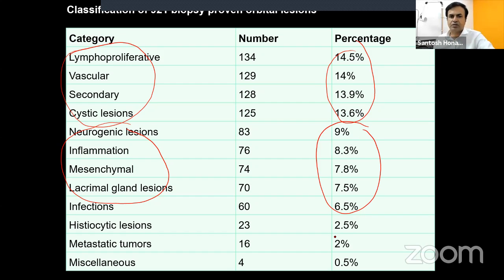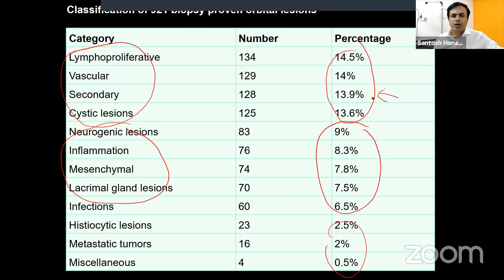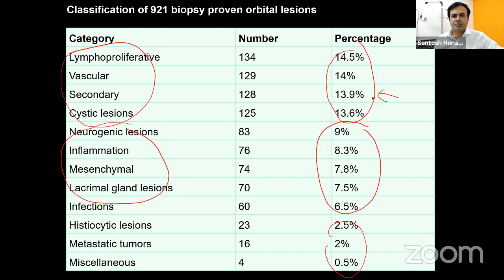Depending on what lesions are more common and the pathology produced — for example, if it's a well-circumscribed intraconal mass, your differential is narrowed to four or five. If it's a well-circumscribed extraconal superior orbital lesion, it narrows to just two or three. All that having been taken into consideration, you proceed to the next step.